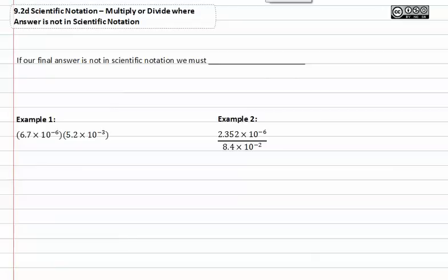We don't always luck out when we're multiplying or dividing using scientific notation. Sometimes, in fact most of the time, we end up with something that has to be converted from almost scientific notation to very obvious scientific notation. If our final answer is not in scientific notation, we must convert it.